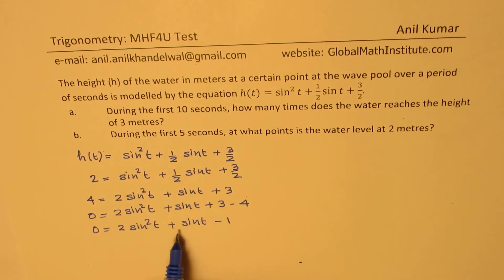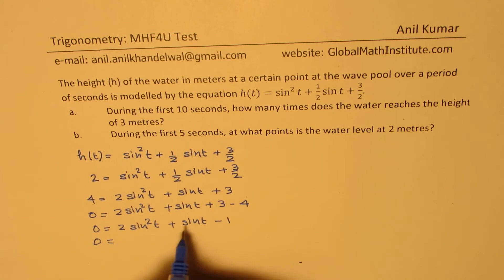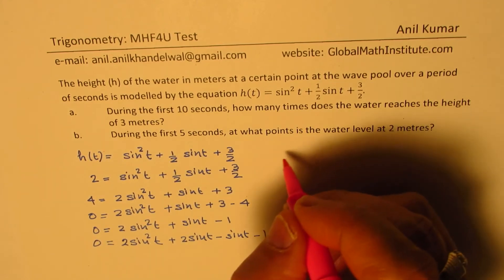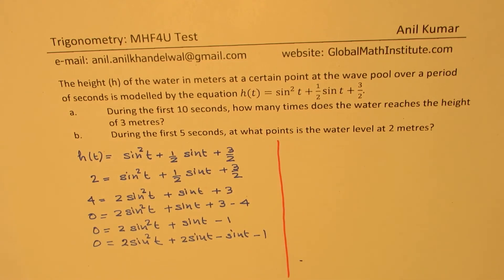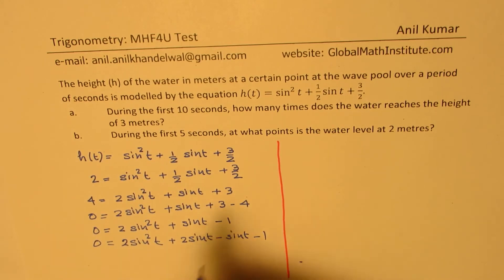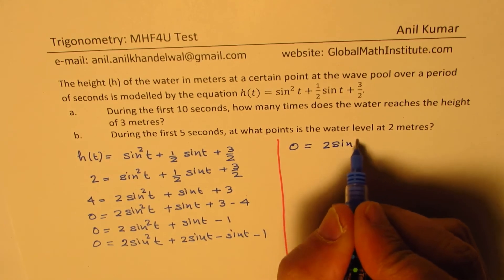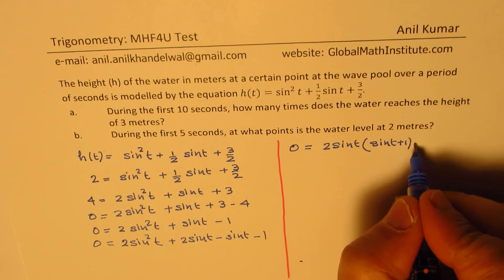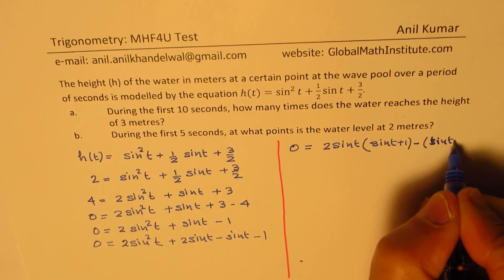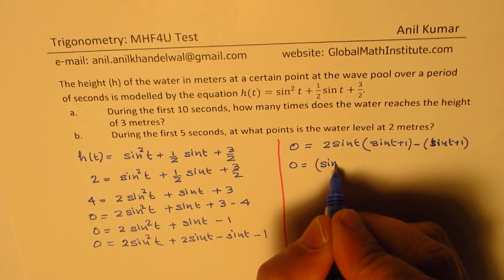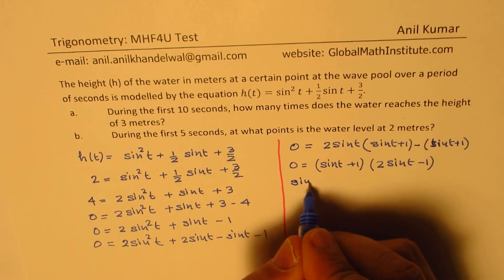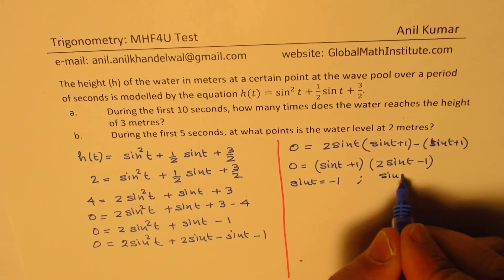To factor 2sin²(t) + sin(t) − 1, we need a product of 2 × (−1) = −2 and a sum of 1, so 2 and −1 work. We split it as 2sin²(t) + 2sin(t) − sin(t) − 1. Taking 2sin(t) common from the first two terms gives 2sin(t)(sin(t) + 1), then taking −1 common gives −1(sin(t) + 1). Now (sin(t) + 1) is common, so we get (sin(t) + 1)(2sin(t) − 1) = 0.